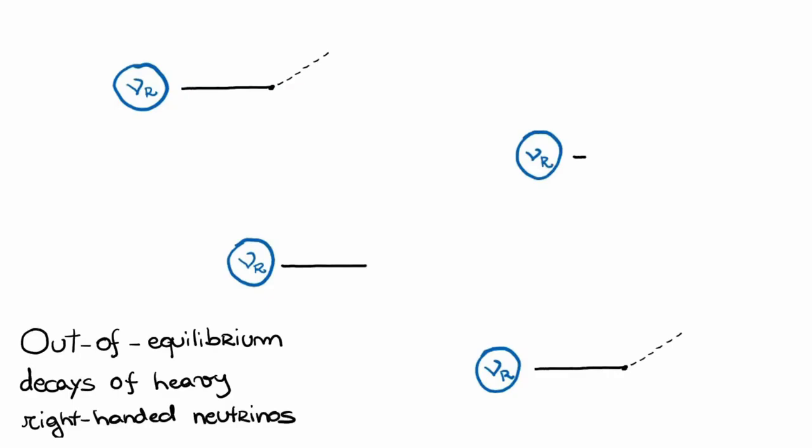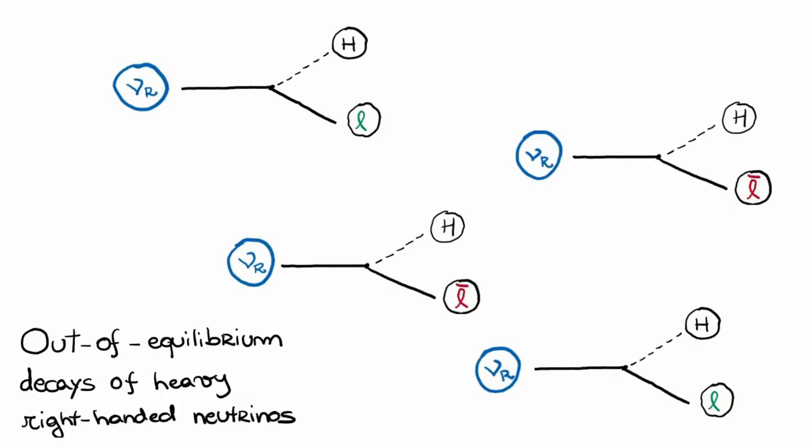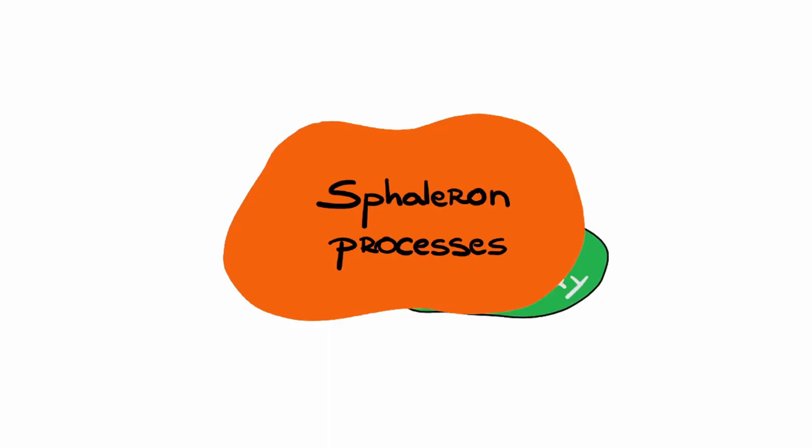Due to their Majorana nature, they may decay into leptons or anti-leptons. This lepton asymmetry is then partially converted into a baryon asymmetry by processes called sphalerons. All in all, leptogenesis is a competition between processes that create or eliminate the observed asymmetry.